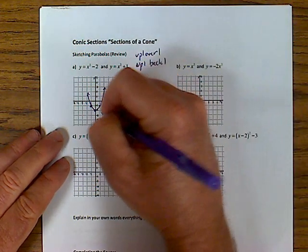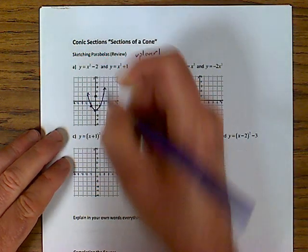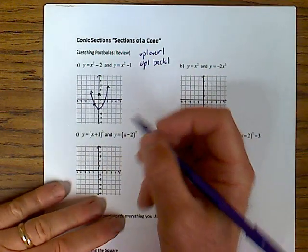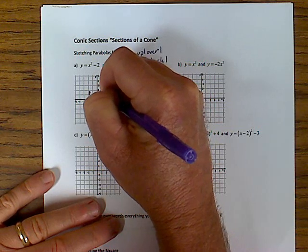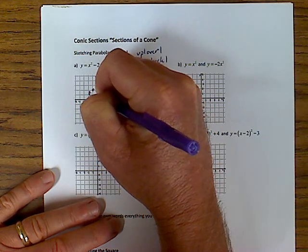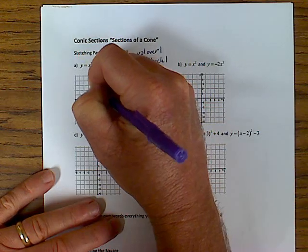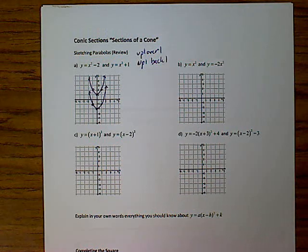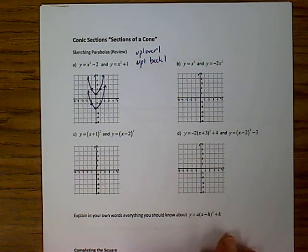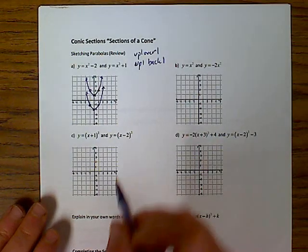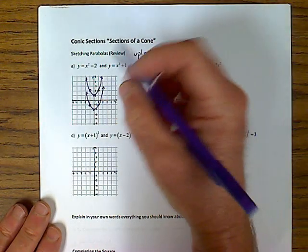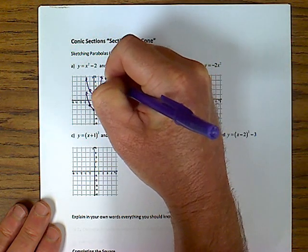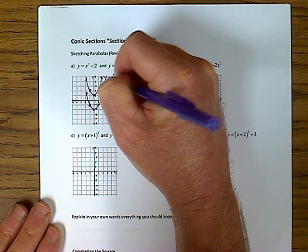Now to graph x squared plus 1, you'll move up 1. Everything starts from the vertex at (0, 0). Plus 1 moves us up 1, and then we go up 1, over 1, up 1, back 1 from there. This is not very complicated — you should feel like you've done this before. Let's go back and label these: the first one is y equals x squared minus 2, and the second one is y equals x squared plus 1.